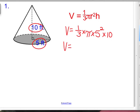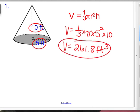So you punch all that in your calculator: 1/3 times the pi button times 5 times 5, or 5 to the second power, times 10. You end up with 261.8 cubic feet when you round. So that's a review of the volume of a cone.